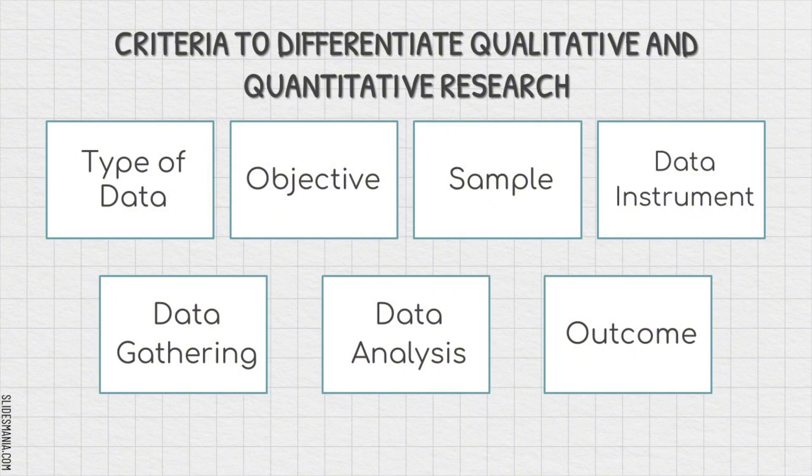First, type of data. Second, objective. Third, sample. Fourth, data instrument. Fifth, data gathering. Sixth, data analysis. And seventh, outcome.